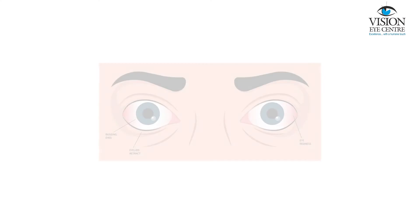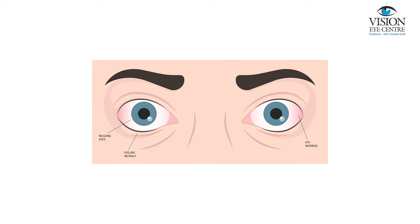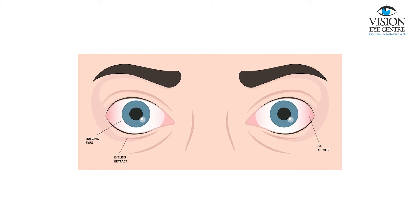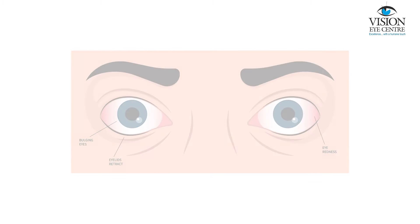There can be certain complicated causes of entropion as well, which can be related to the inner part of the eye. These can happen after chemical injuries, thermal burns, or certain autoimmune conditions of the eye.